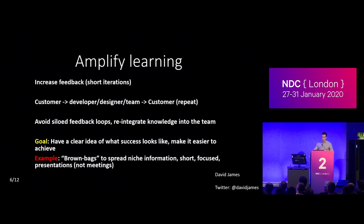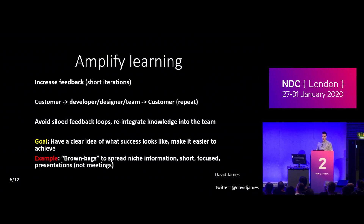Amplify learning is the next principle. For those of you using agile software delivery, you'll already be used to this. Learning comes from an iterative cycle of feedback with the customer, to the team, involving everybody as much as possible. Getting your team as close to the customer as possible is really important. What we try to avoid is silos of information, and we try to reintegrate any knowledge back into the team. We refer to these as brown bags — you could bring your lunch along. It's not a meeting in the traditional sense; it's more of a short 10 or 15 minute presentation to the team about something you've learned about the product, customer, or process.